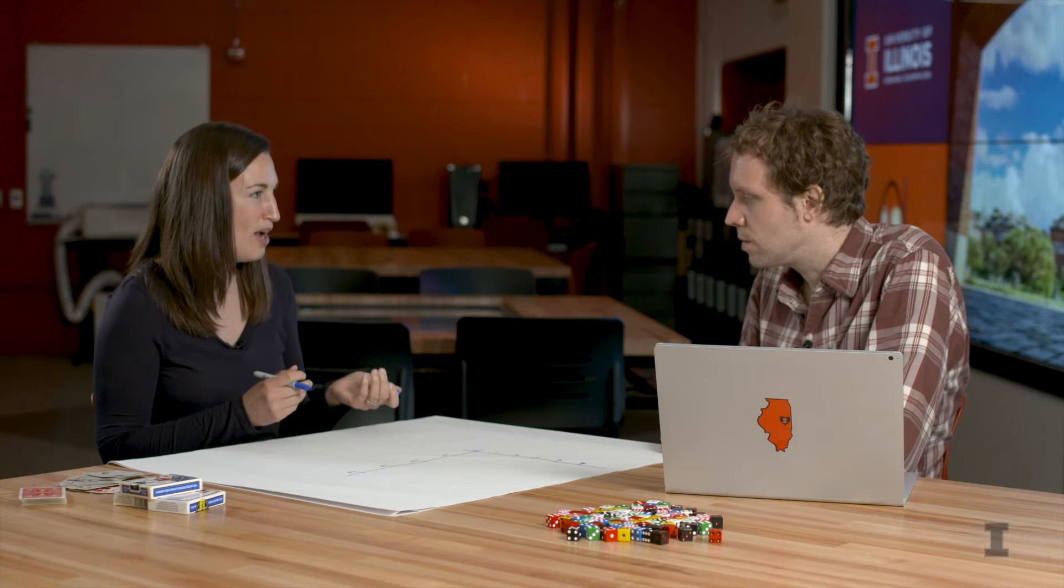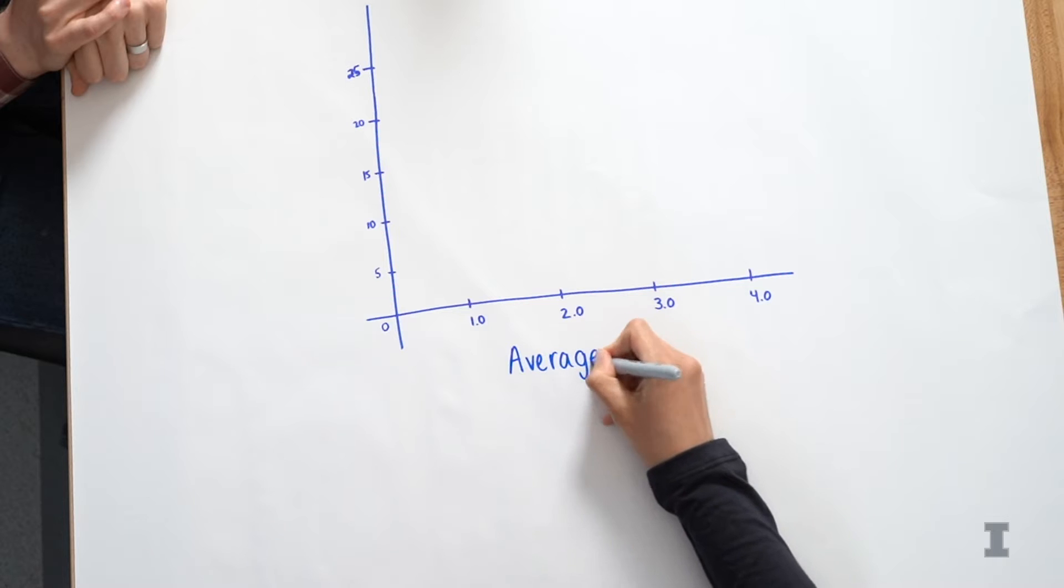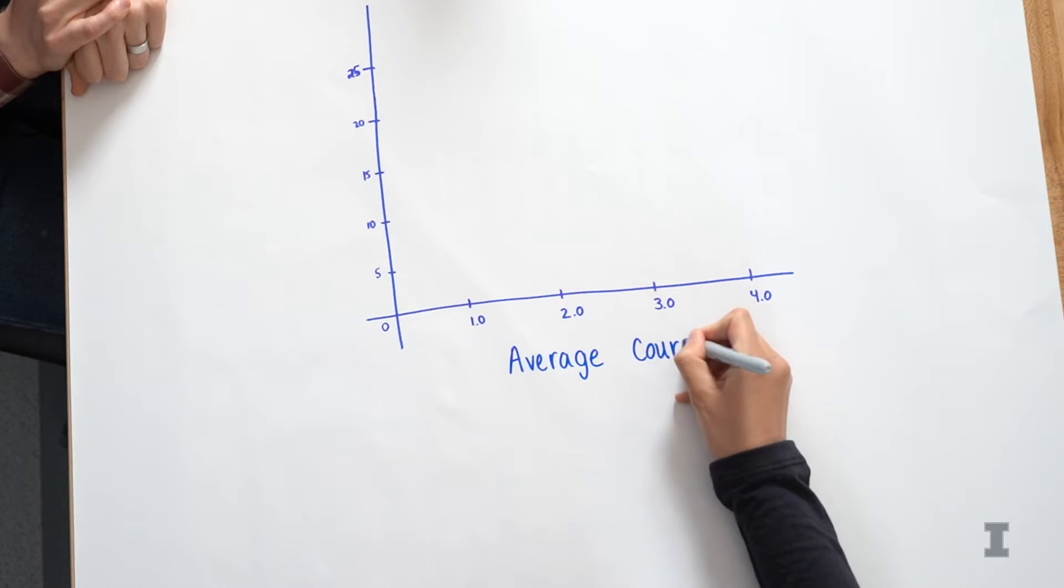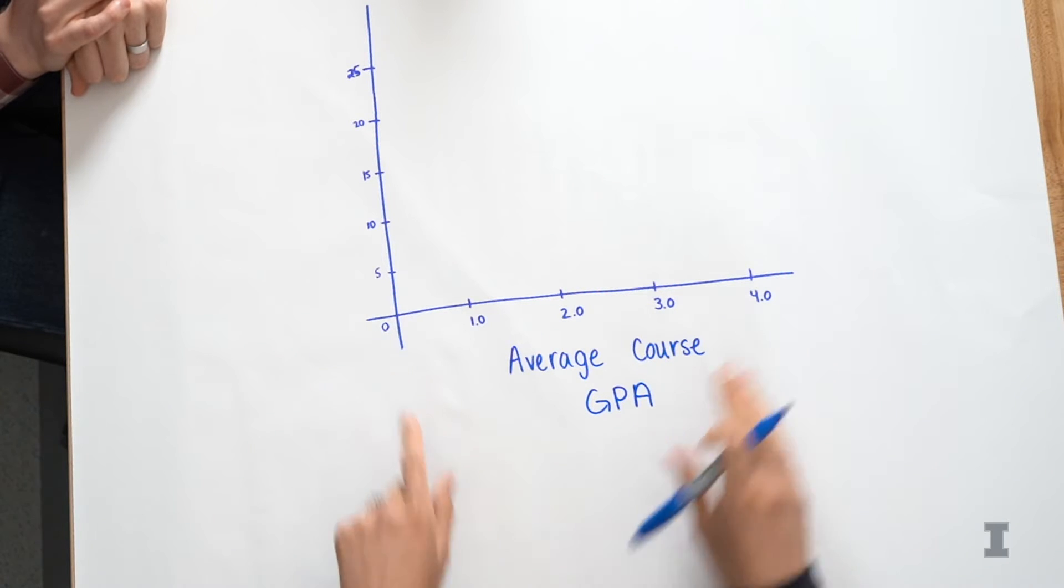So the x-axis we said was the average GPAs, right? Yeah, average course GPA. So I'm going to call this the average course GPA. And it ranges from 0.0 to 4.0, F to A.